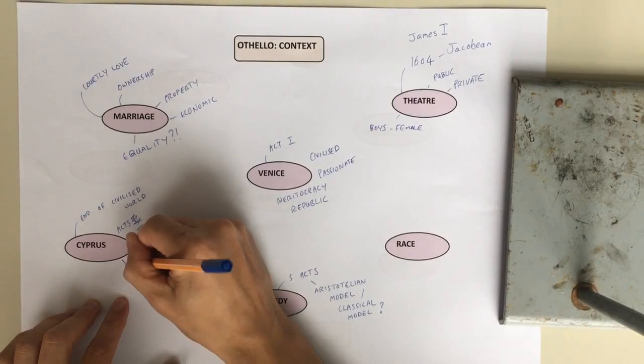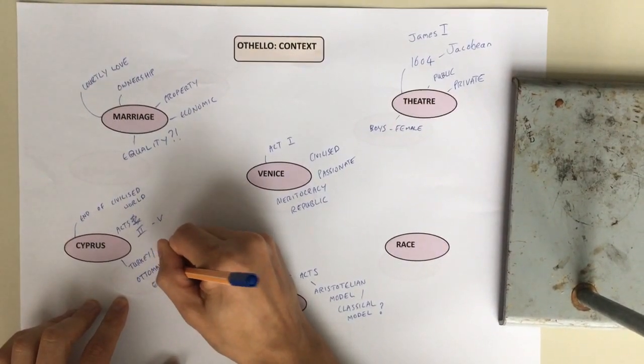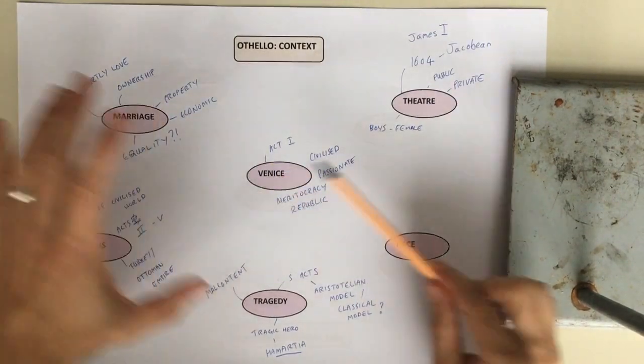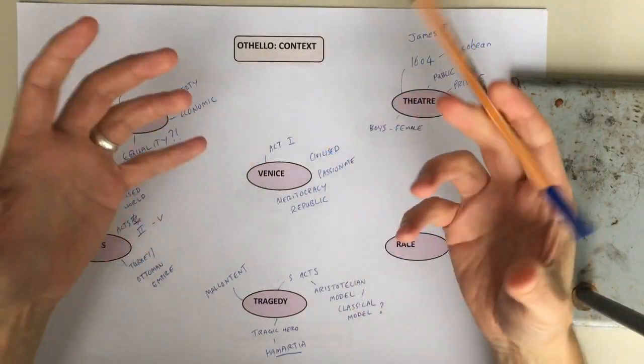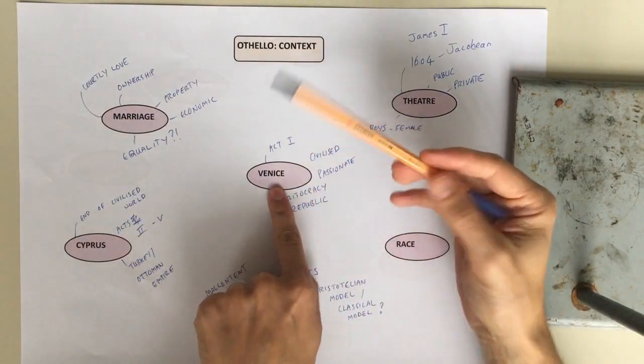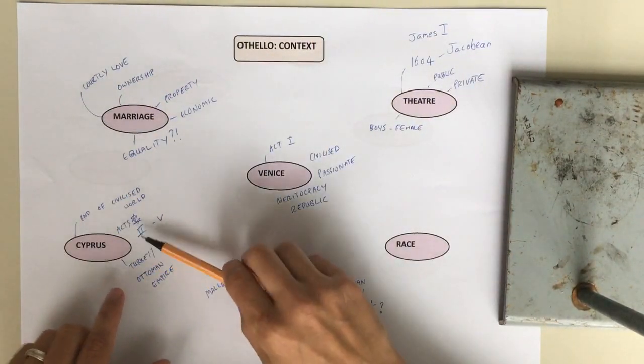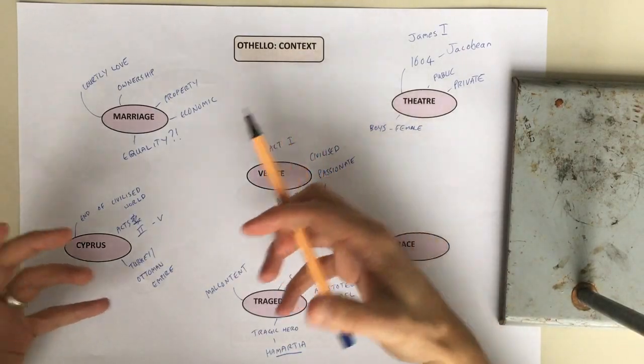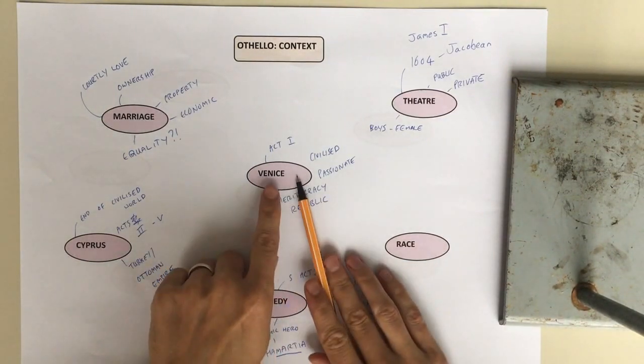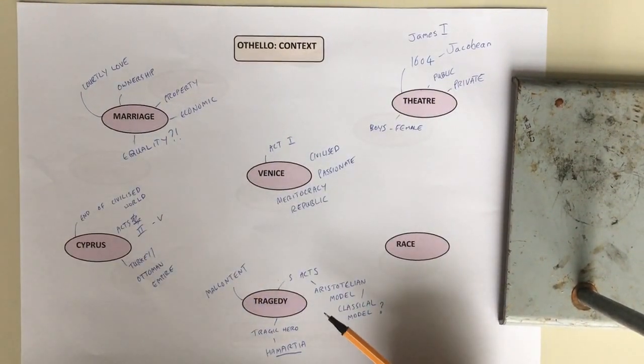So it's set in a place at the very end of the civilised world, close to Turkey or the Ottoman Empire, which is seen as this very dangerous force. So we've got a really complex picture of race emerging here as well, because this more meritocratic, anybody-can-get-on world of Venice has allowed Othello to rise to the height of his profession, which is very unusual for a person who is black at this time. However, there's an almost racist attitude towards this other in terms of the Ottoman Empire, this Islamic Empire threatening Europe in the 16th and 17th centuries. And so Othello, who is the general of Venice, actually goes to Cyprus to fight the Turks. So it's quite a complex picture of race going on in the play.